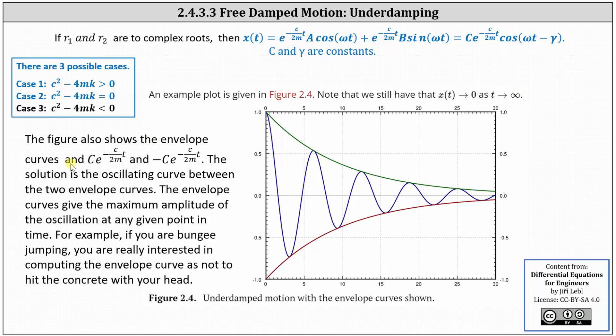The figure also shows the envelope curves, which are c times e to the negative c divided by 2m times t, and negative c times e to the negative c divided by 2mt. The solution is the oscillating curve between the two envelope curves.